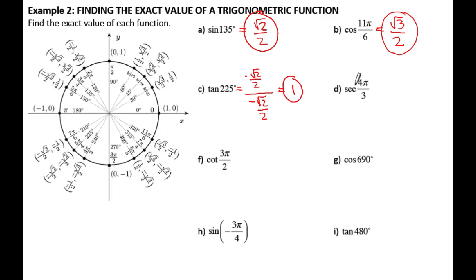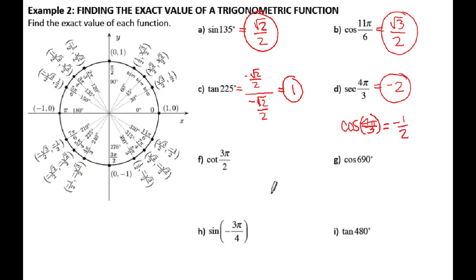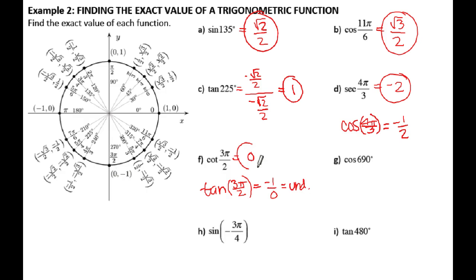Secant is the reciprocal of cosine. So for secant of 4π/3, I find cosine of 4π/3 first — cosine is my x-coordinate, so x at 4π/3 is -1/2. If cosine is -1/2, then secant is -2 because they're reciprocals. Cotangent matches up with tangent. For cotangent of 3π/2, I find tangent of 3π/2 first: tangent is y divided by x, which is -1 divided by 0 — that's undefined since you can't divide by 0. So if tangent is undefined, then cotangent, its reciprocal, is going to be 0.